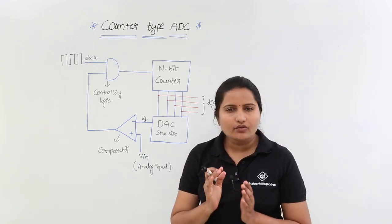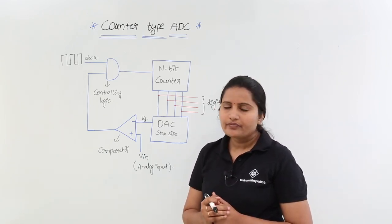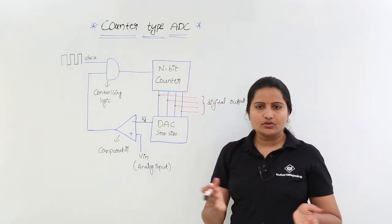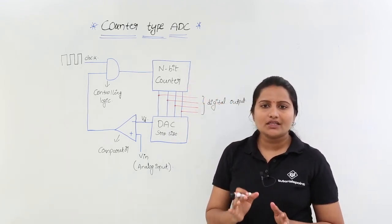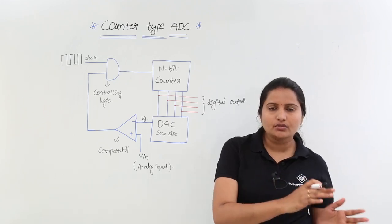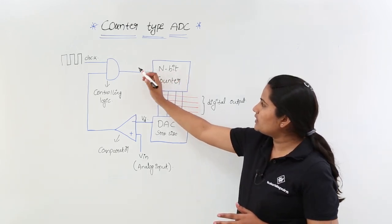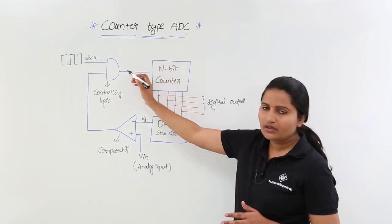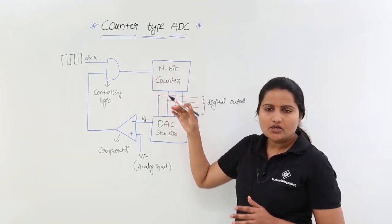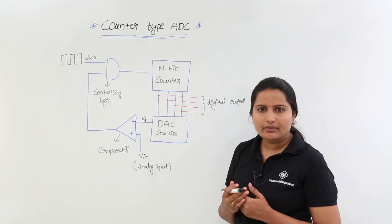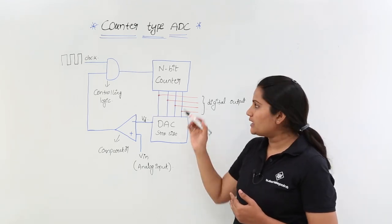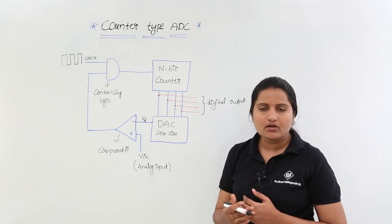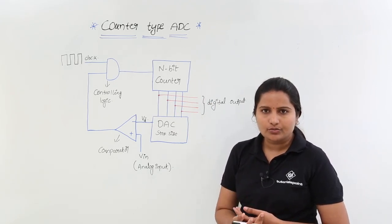Now I will explain how each block is going to work. The n-bit counter counts the number of pulses coming to its input. It counts the number of pulses coming into the input side, and gives the count in terms of number of bits — that is, in digital output.